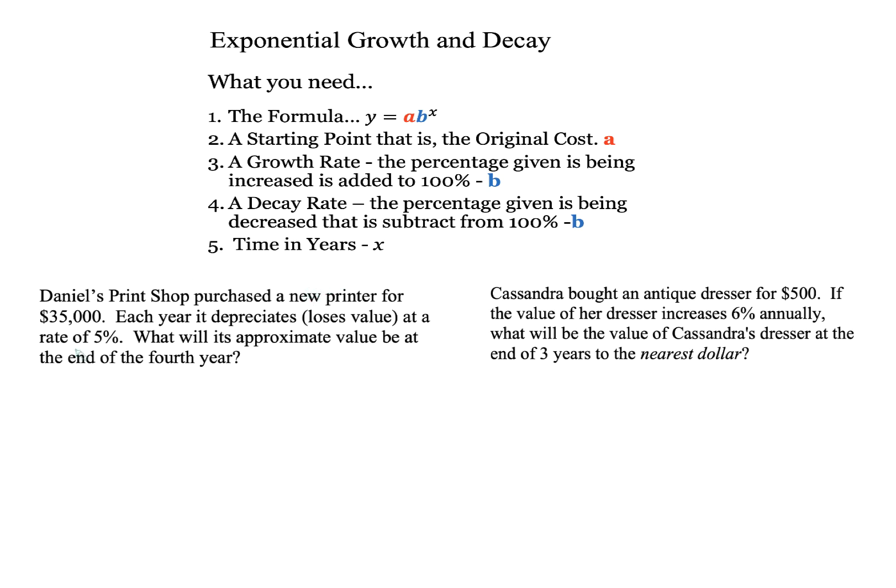Let's look at our first problem. Daniel's Print Shop purchased a new printer for $35,000. Each year, it depreciates, loses value at a rate of 5%. What will its approximate value be at the end of the fourth year? Because it loses value, this would be a decay exponential function. So remember what I said, your first step, write the formula Y equals A, B raised to the X.